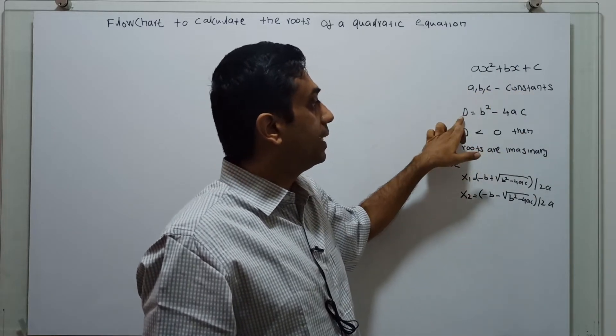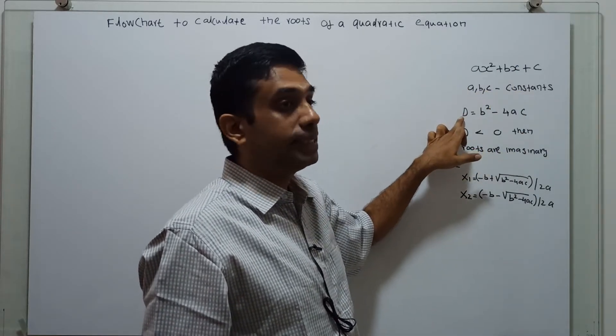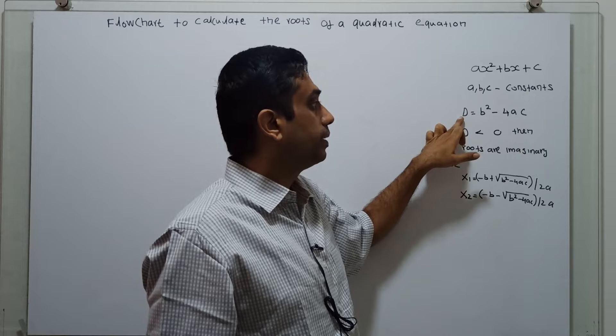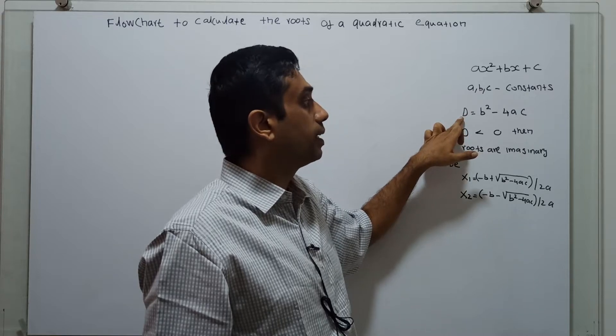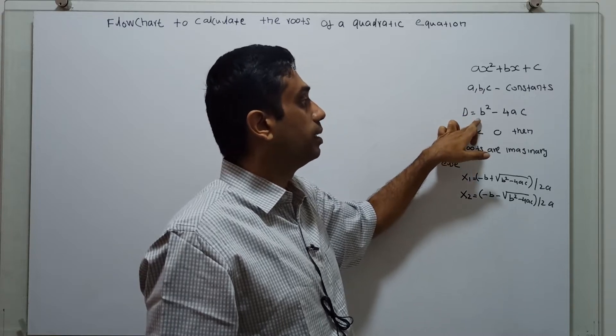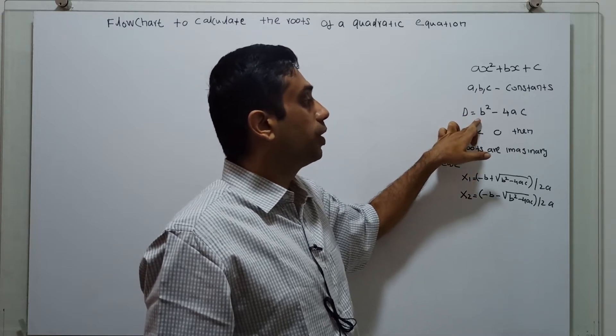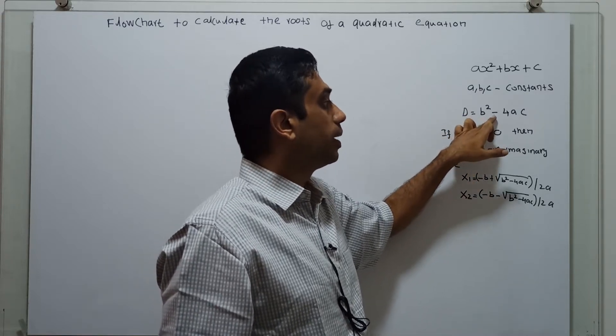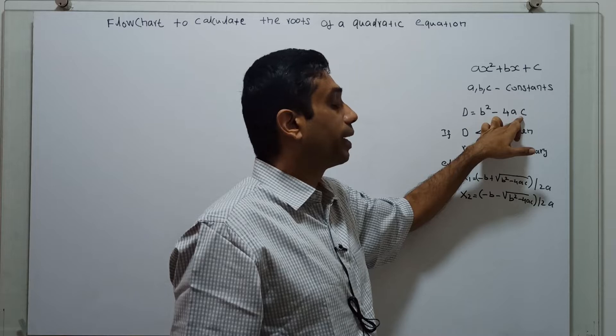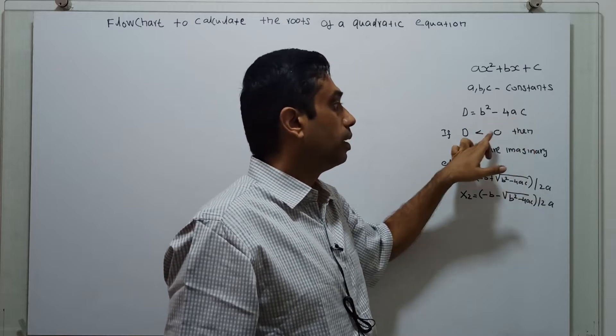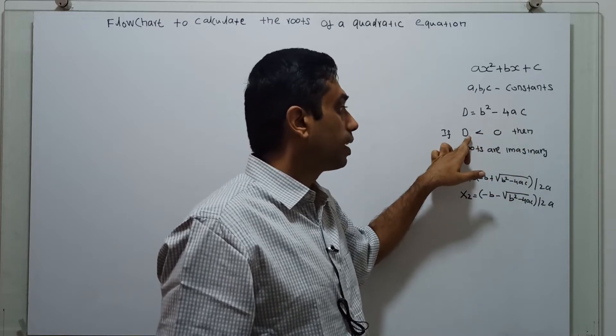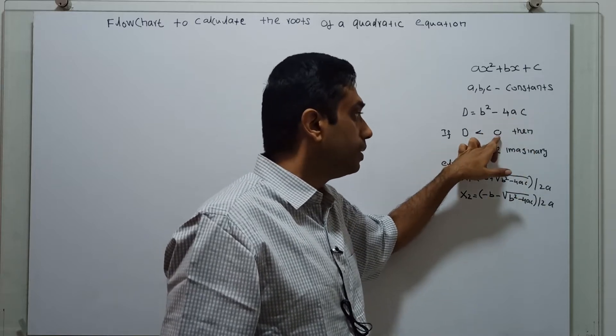d is the discriminant. The discriminant is calculated by the formula b squared minus 4ac. If the discriminant is less than 0,